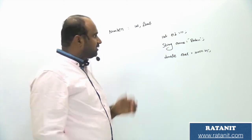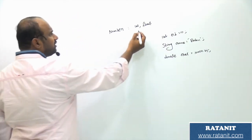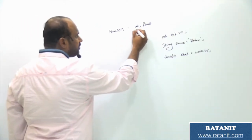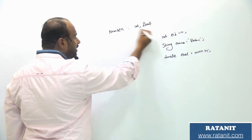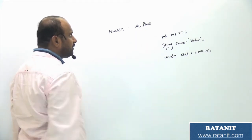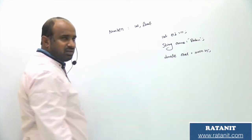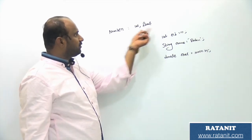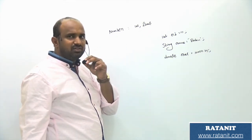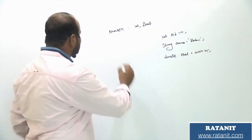Coming to Python — to represent numeric values we have only one data type: integer. To represent decimal values we have the float data type.